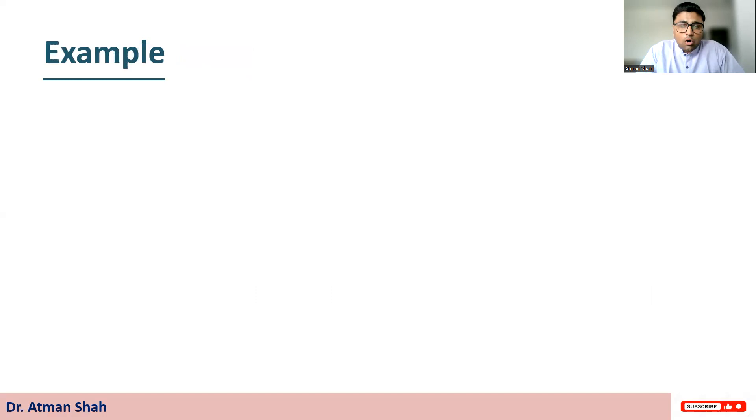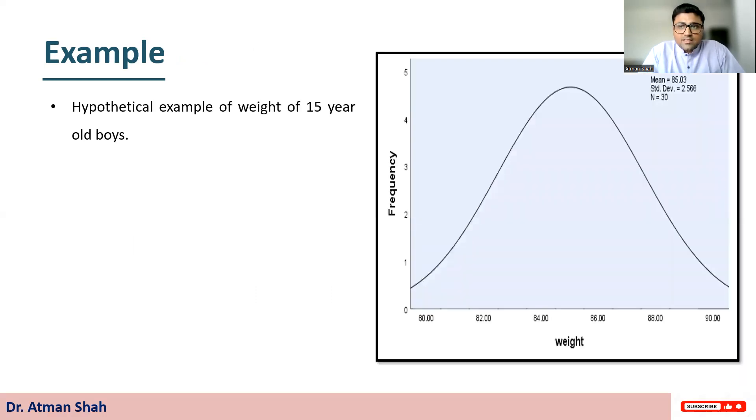Let's understand the idea of normal distribution with the help of example. So here we have the hypothetical example of weight of 15 year old boys. So you can see here I have the diagram. The distribution of weight follows the normal distribution. So we have this normal curve or bell shaped curve.